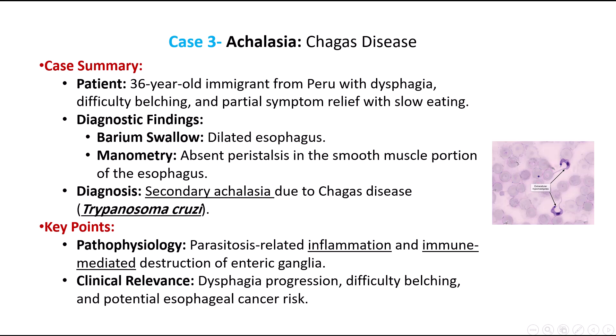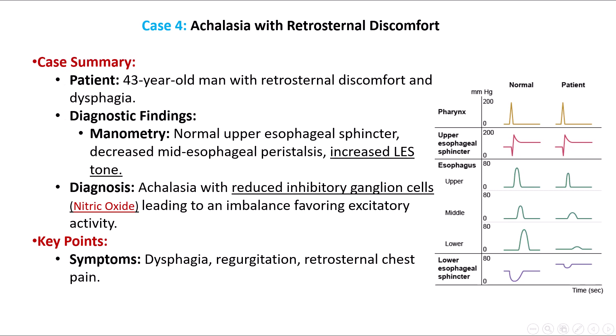Patients with Chagas disease experience progressive dysphagia, difficulty belching, and an increased risk for esophageal cancer. In another case, a 43-year-old man with retrosternal discomfort and dysphagia has esophageal manometry revealing normal upper esophageal sphincter contraction but decreased peristalsis in the mid-esophagus, with increased tone and incomplete relaxation at the LES. These findings are characteristic of achalasia, caused by reduced numbers of inhibitory ganglion cells, leading to dysphagia, regurgitation, and retrosternal chest pain, often accompanied by a dilated esophagus with distal narrowing on barium esophagram.